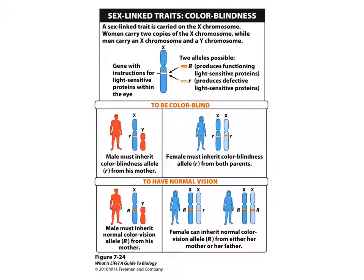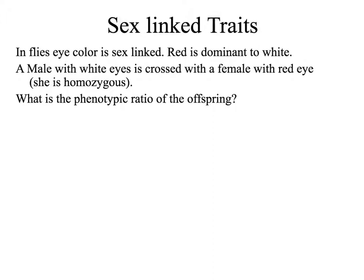We're going to work through some X-linked or sex-linked genetics problems. Remember, when you do sex-linked problems, you're going to have to keep track of your sex chromosomes — the X's and Y's. You also need to remember that Y chromosomes are very small and don't carry many traits. Therefore, all of these traits are going to be carried on the X chromosome. In fruit flies, eye color is sex-linked, and red is dominant to white. First step is to set up a key of alleles: big R is dominant for red, little r is white.